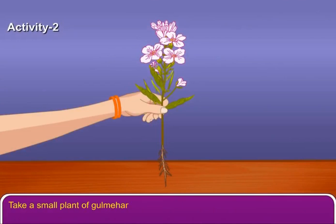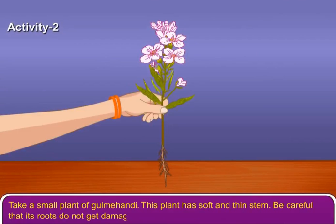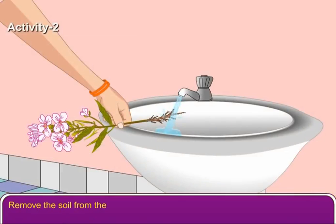Take a small plant of gulmehendi. This plant has soft and thin stem. Be careful that its roots do not get damaged. Remove the soil from the roots by washing them with water.